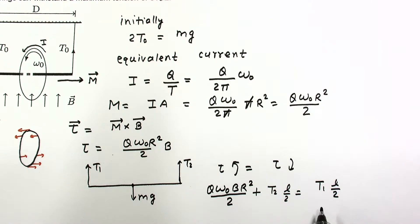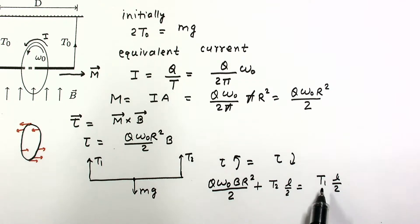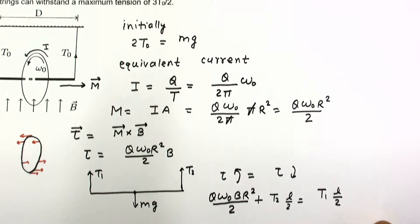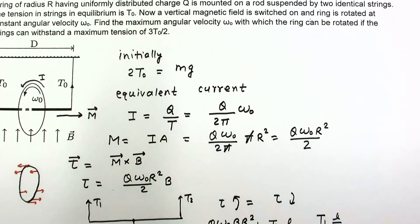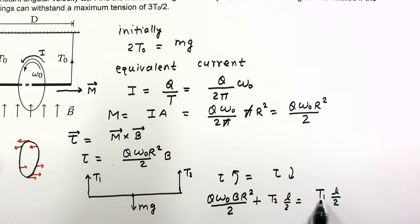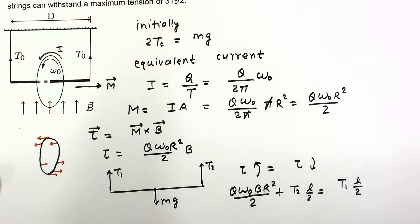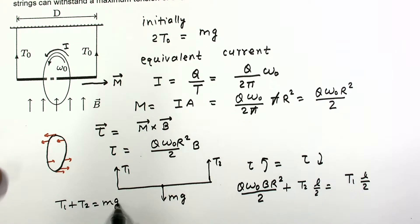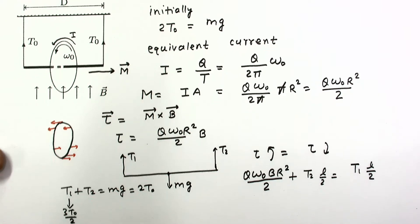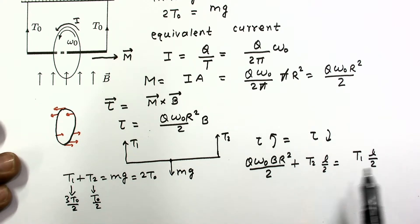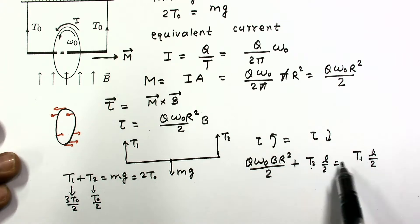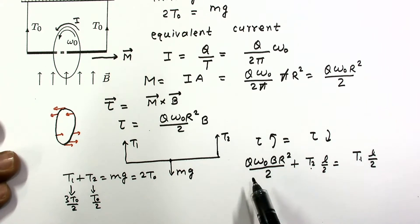If we increase ω, T1 must increase up to its maximum value of 3T₀/2. When T1 = 3T₀/2, then T2 = T₀/2, because T1 + T2 must always equal Mg = 2T₀. So from the equilibrium equation, T1 + T2 = 2T₀. With T1 = 3T₀/2, we get T2 = T₀/2. This gives us the maximum value of ω₀ for this situation.